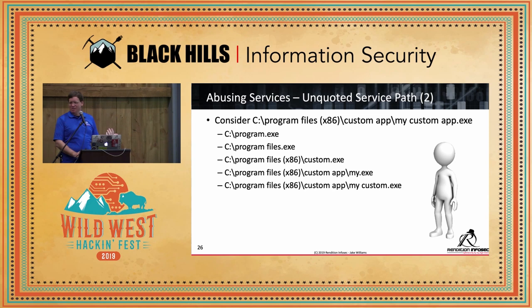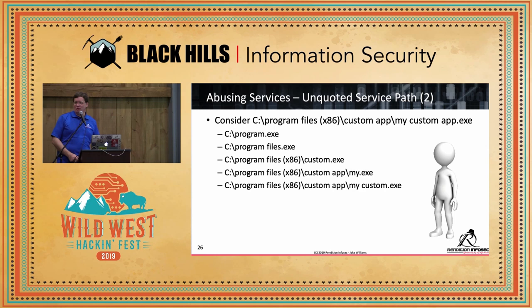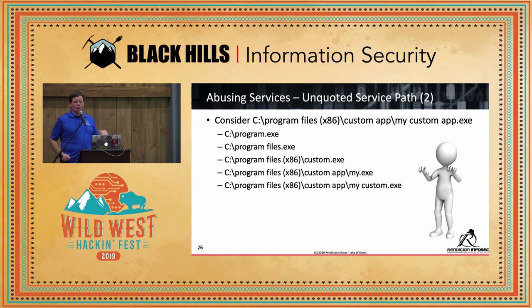If you can write an executable at any one of those locations, the next time that service restarts with the unquoted path, game on. If you want to find an O-Day, go on your Windows machine, create a file named program.exe — make it Putty or calc — Windows will warn you that this can cause problems, say yes. A couple months from now Putty will pop and you'll think somebody hacked your box. Then step back, open Process Hacker or Process Explorer, look at the parent lineage, see what has the problem, and then responsibly disclose the O-Day.